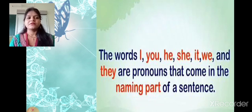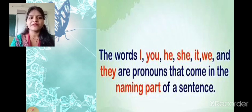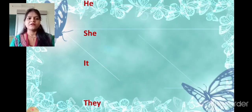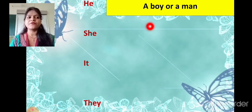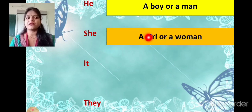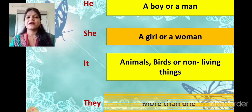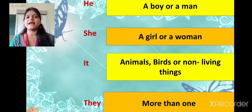Now, the words I, you, he, she, it, we and they are pronouns that come in the naming part of a sentence — that means with the noun. He is used for a boy or a man. She is used for a girl or a woman. It is used for animals, birds and non-living things. And they is used for more than one.